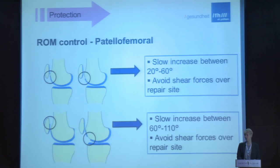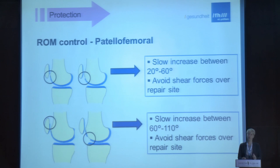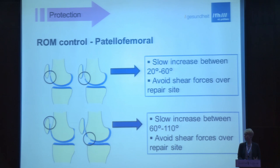Range of motion control is very important in the patellofemoral joint. Perform a slow increase between 20 to 60 degrees if you have a defect at the inferior part of the patella or superior part of the trochlea. If your defect is located in the superior part of the patella or inferior part of the trochlea, perform a slow increase between 60 and 110 degrees and avoid shear forces over the repair zone.